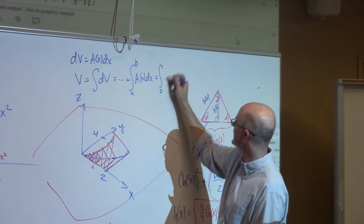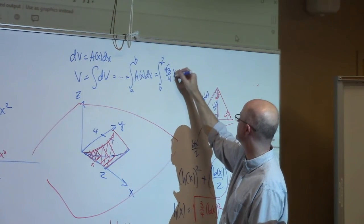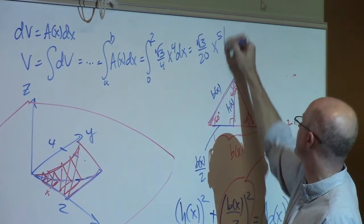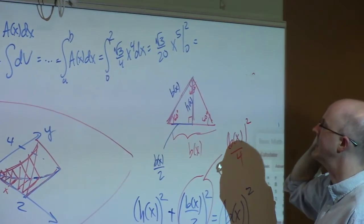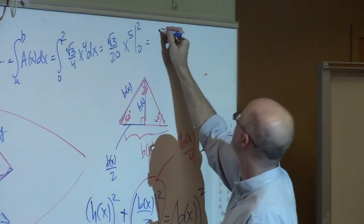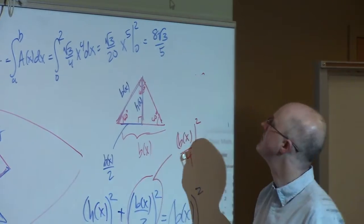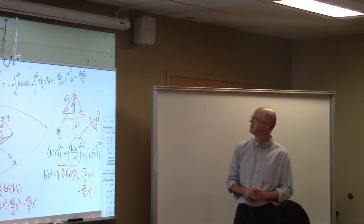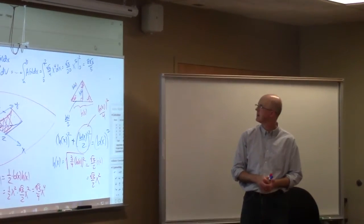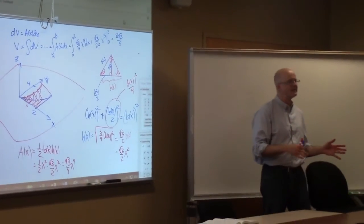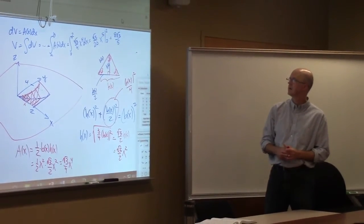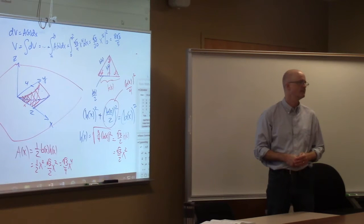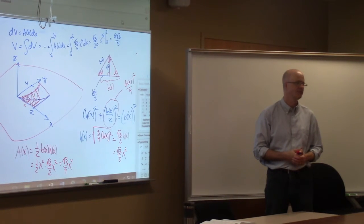For our situation, x goes from 0 to 2. We integrate square root of 3 over 4 times x to the 4th. This is going to give us square root of 3 over 20 x to the 5th. 2 to the 5th is 32. 32 over 20 is 16 tenths or 8 fifths. 8 times the square root of 3 over 5 is what appears to be the answer. 32 over 20 and 16 over 10 is 8 over 5 times square root of 3. Square root of 3 is about 1.7. 8 times 1.7 is in the ballpark of 13 or 14. Divide by 5, you get something between 2 and 3 cubic units for the volume.